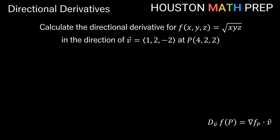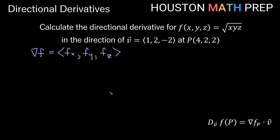We'll do one more directional derivative, this time for a function of x, y, and z. Our function is √(xyz), and we'll calculate in the direction of the vector (1, 2, -2) at the point (4, 2, 2). The first thing to do is evaluate the gradient. For a function of three variables, the gradient has components (∂f/∂x, ∂f/∂y, ∂f/∂z).